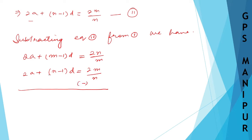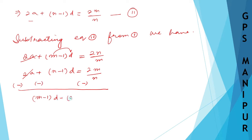Changing signs for subtraction: 2a − 2a cancels. We get (m−1)d − (n−1)d on the left, and 2n/m − 2m/n on the right.